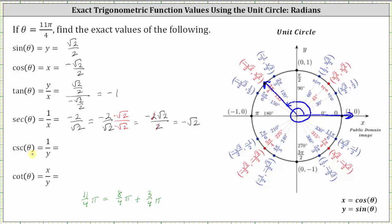Next, cosecant of 11 fourths pi radians is equal to the reciprocal of the sine function value, or one divided by y. The reciprocal is positive two divided by square root two. Rationalizing the denominator gives us two square root two divided by two, which simplifies to positive square root two. Finally, the cotangent function value is equal to the reciprocal of the tangent function value. The reciprocal of negative one is still just negative one.